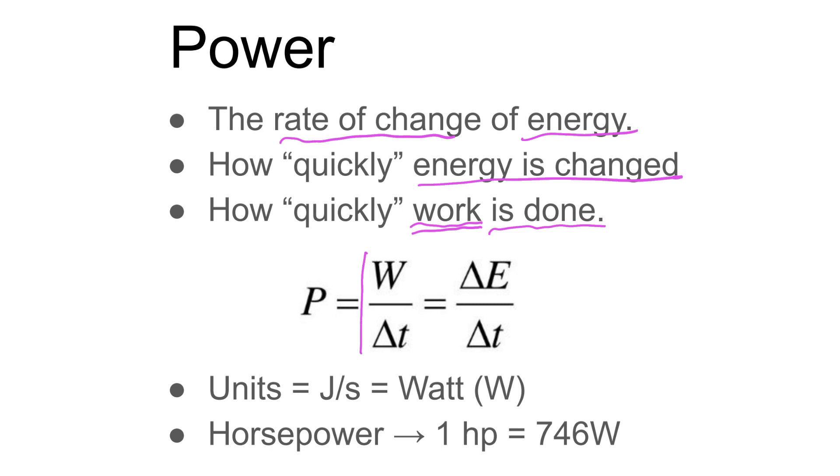In equation form, that would be simply like work over time or the change in energy over time. Units: since energy is joules, the unit would be joules per second. We rename this into a watt, that's the SI unit we'll be using. Sometimes you'll hear horsepower, we're just comparing the power of a horse, and one horsepower is essentially about 746 watts.